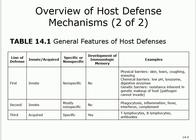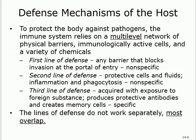The second line is inflammation, phagocytosis, fever, interferon, and complement. The third line — the only specific one — is T and B lymphocytes, with details we will discuss later.